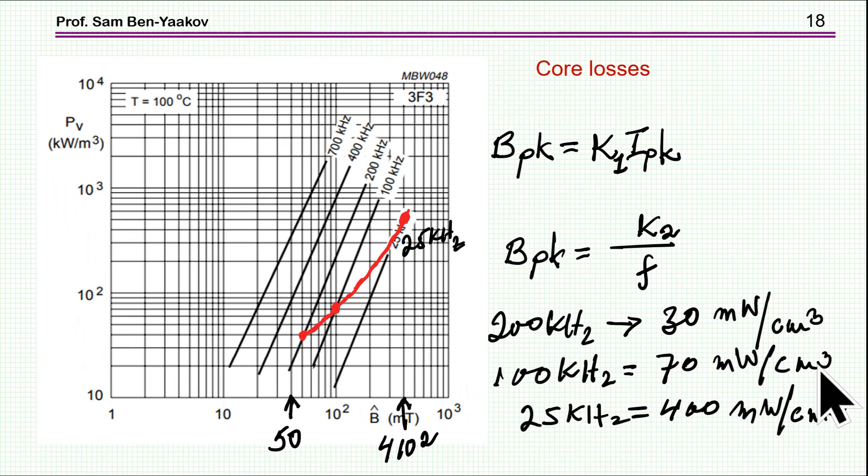Now if I double the frequency, I go to this curve here. However, when doubling the frequency, the B_peak is going down because it is inversely proportional to the frequency.